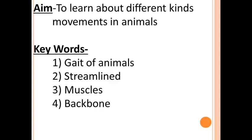Hello everyone, this is our last session of lesson number eight, body movements. In previous sessions we learned about the movements of human beings with the help of the skeleton and joints. Now in this session we are going to learn about movements in animals. Write the aim and keywords: aim is to learn about different kinds of movements in animals. Keywords: gait of animals, streamlined, muscles, and backbone.